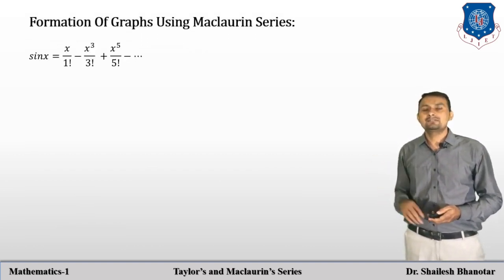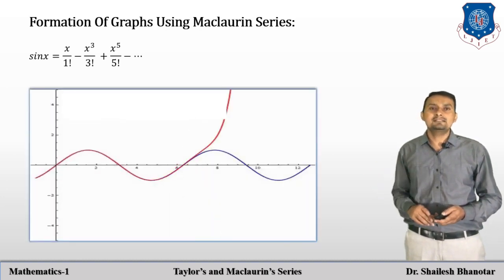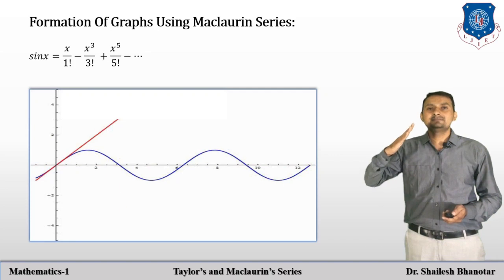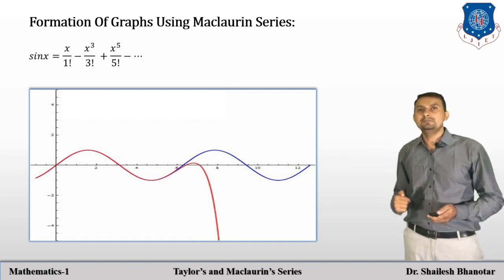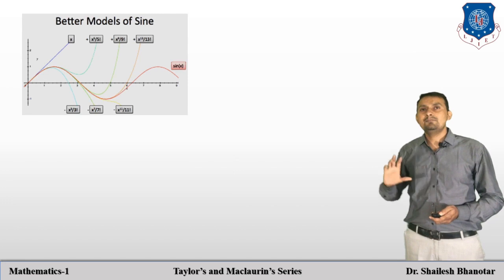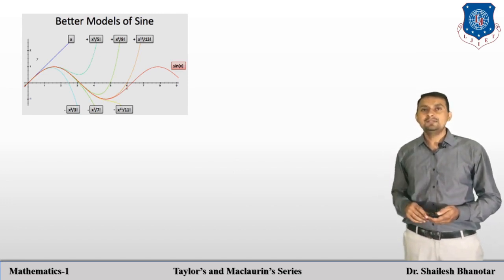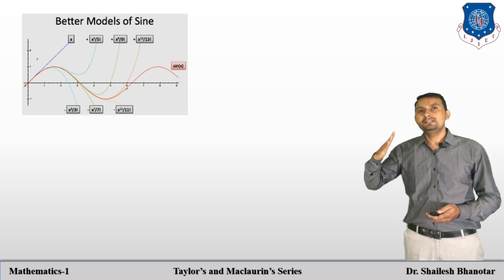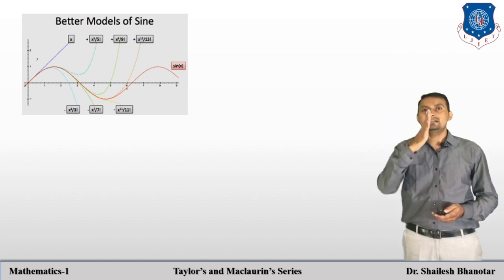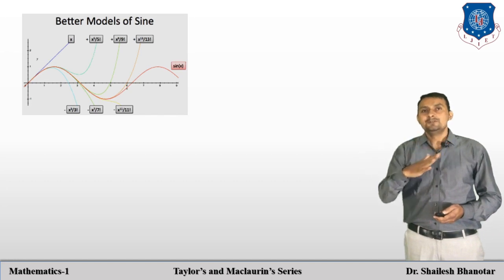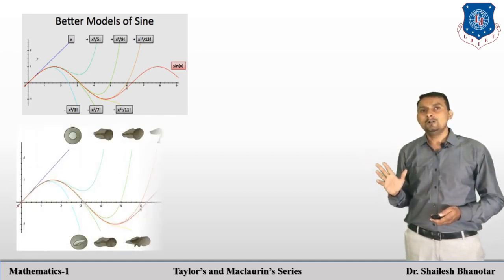Now let us look at some graphs using the Maclaurin series. For sin x, we already discussed that: first y = x (one term), then two terms, three terms, four terms, five terms — and based on that we can estimate the graph of sin x. This is a better model of the sine function — you can understand why we sometimes use it in real-life problems.